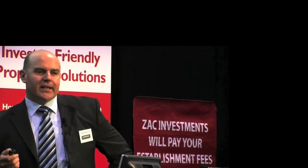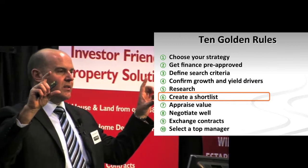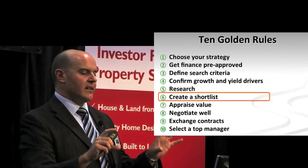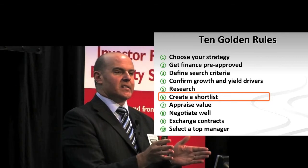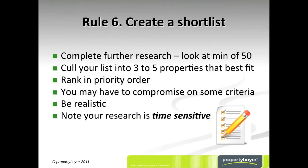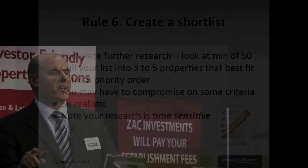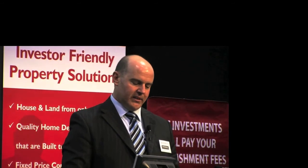Rule number six: create a shortlist. You've identified your suburbs, you've gone out there and looked at at least 50 properties — now you've got to cull your list down to three or five. You've got to get really ruthless and rank your properties in order, getting down to just three to five that you'll be making offers on. Understand that your research is time sensitive — there's competition out there among investors, and the good deals go quickly.